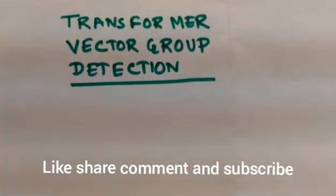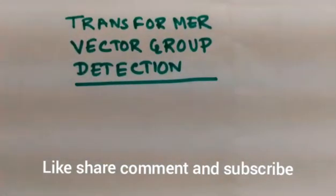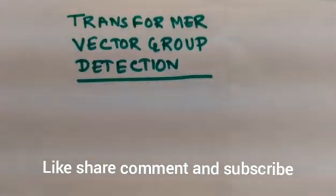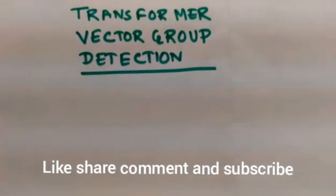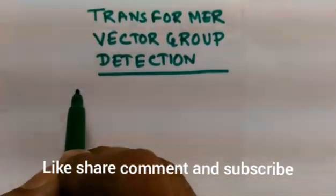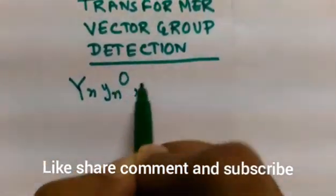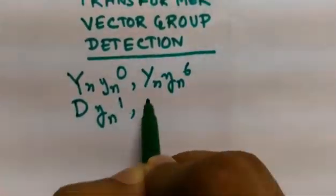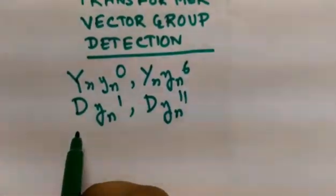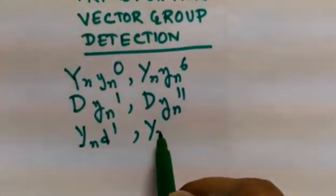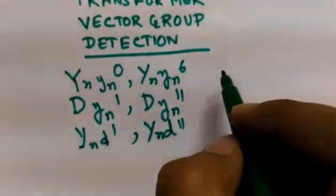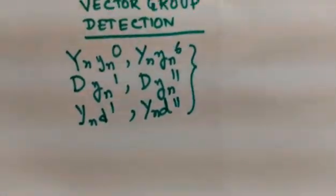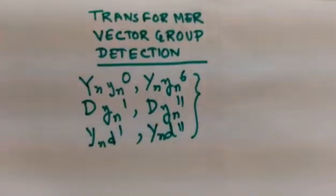Welcome to my channel, Electrical Technology and Industrial Practice. In this video we shall see how transformer vector group is detected. As we all know, a transformer has different vector groups such as YnYn0, YnYn6, DYn1, DYn11, YnD1, YnD11, and so on. These are the few major vector groups which are often used.